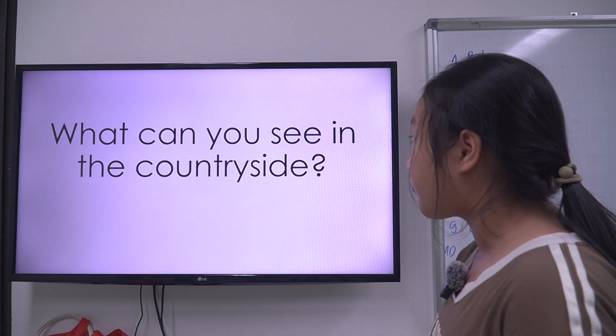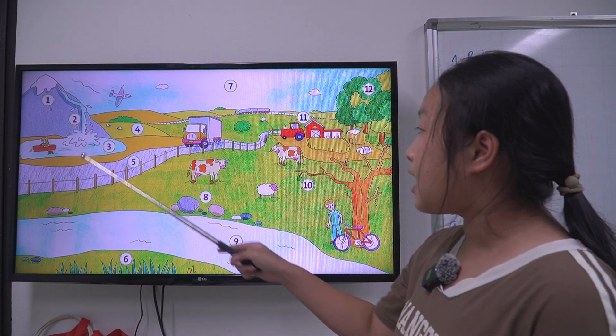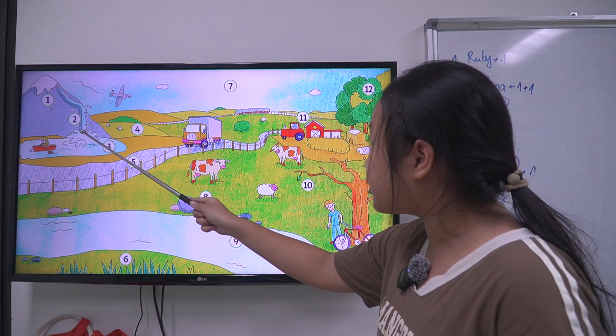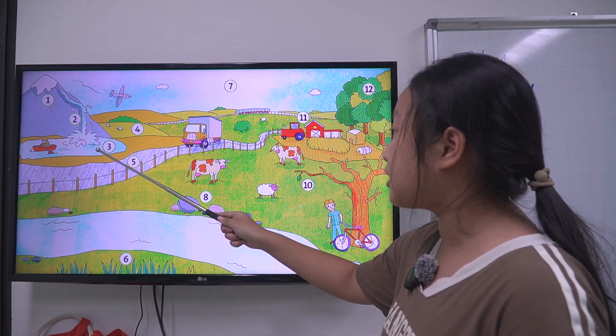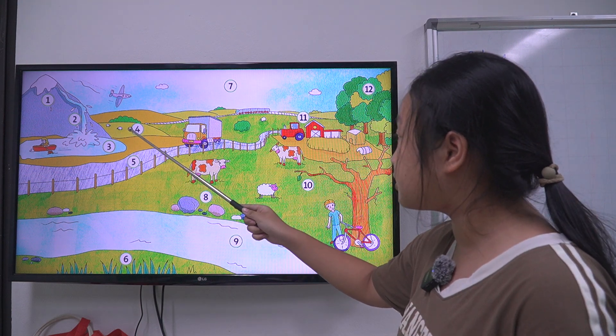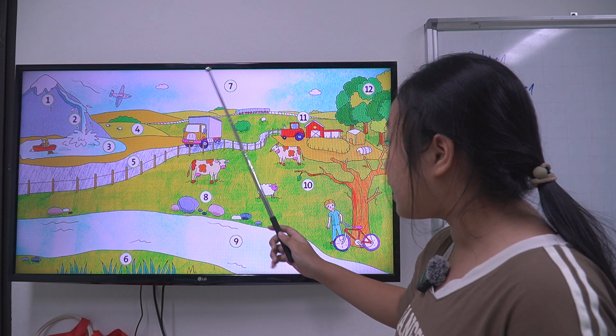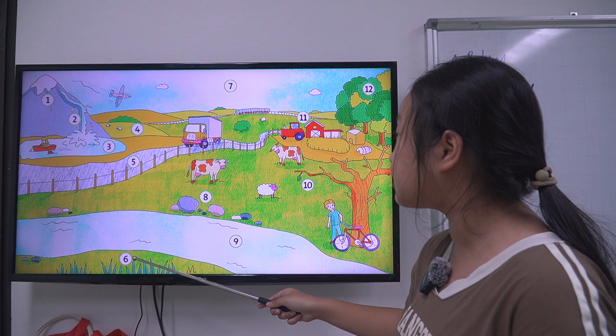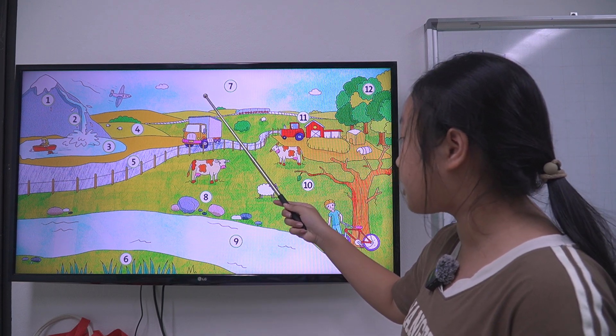Next one, what can you see in the countryside? I can see the mountain, I can see the waterfall, I can see the lake, I can see the field, I can see the road, I can see the grass, I can see the sky,